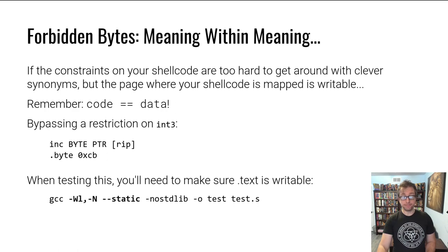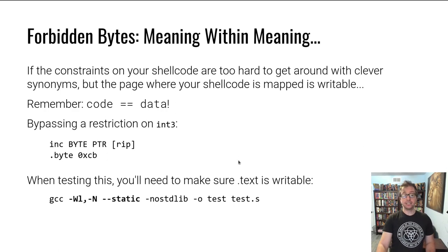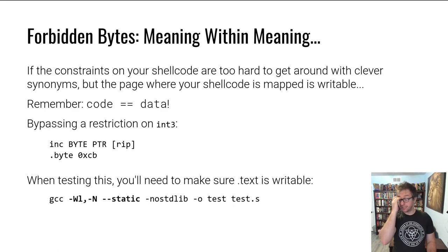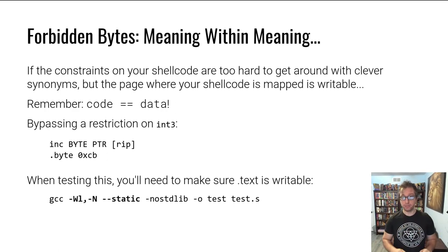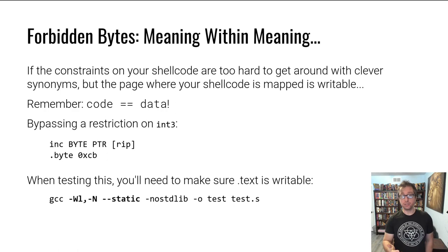You can do this with the -Wl,-N flag. Capital W-l tells GCC to pass this option to the linker, and this option as a side effect makes a writable text segment. Then you can do this sort of self-modifying shellcode. Of course, at execution time, usually your shellcode is writable — but not always.